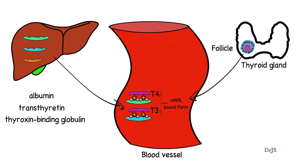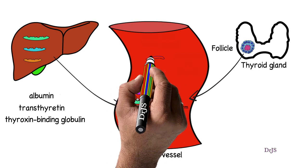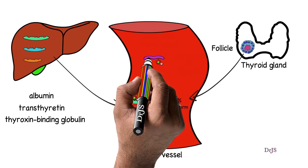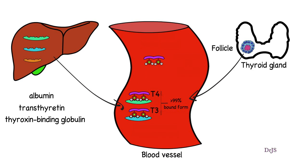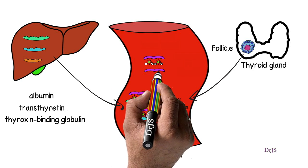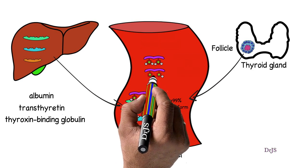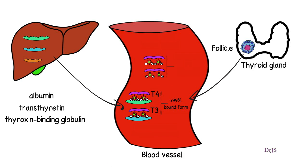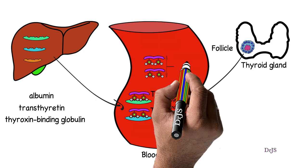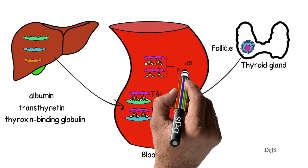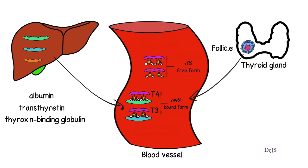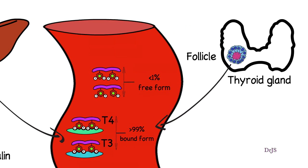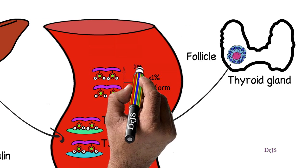More than 99% of T3 and T4 are bound to these proteins, and less than 1% are in free form. This free form is physiologically active.